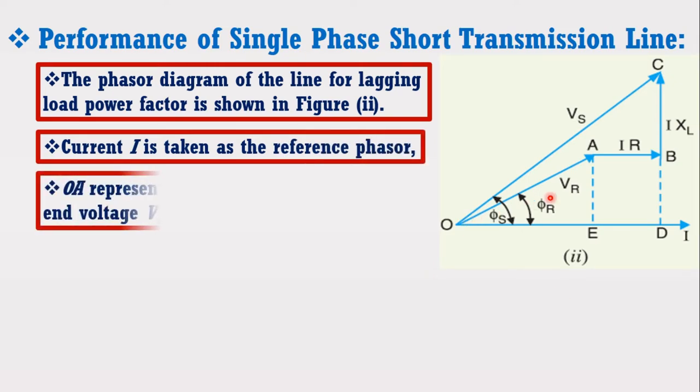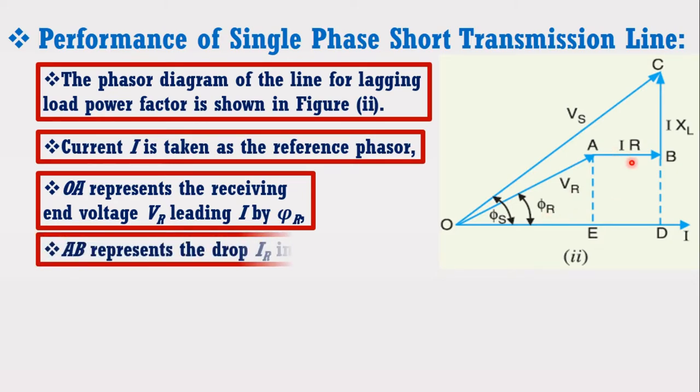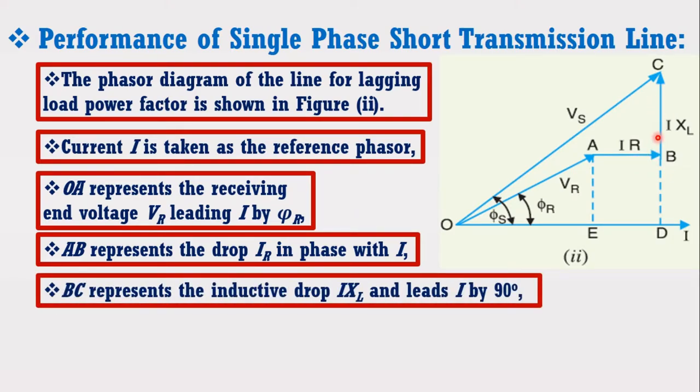OA represents the receiving end voltage Vr leading I by phi r. AB represents the drop IR in phase with I. BC represents the inductive drop IXL and leads I by 90 degree.